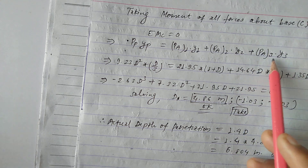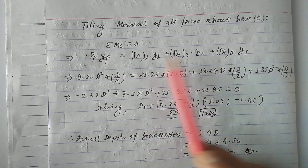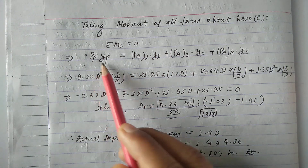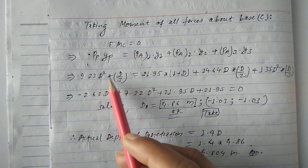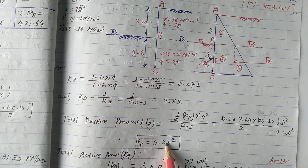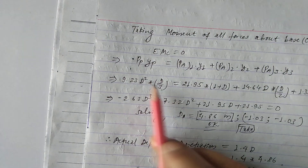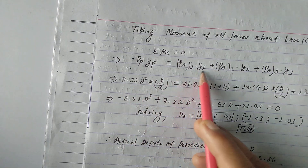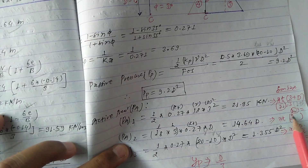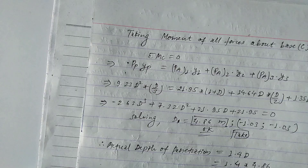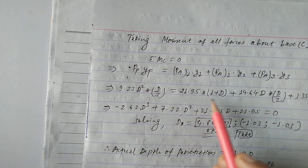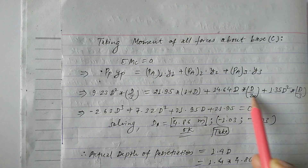Substituting values: PP = 9.2d² with moment arm d/3. So 9.2d² × (d/3) equals Pa1 × y1, where Pa1's moment arm y1 = d/1. Pa2 = 21.95d with distance (1 + d). Pa3 = 1.355d² with moment arm d/3. Solving this equation gives the value of d.